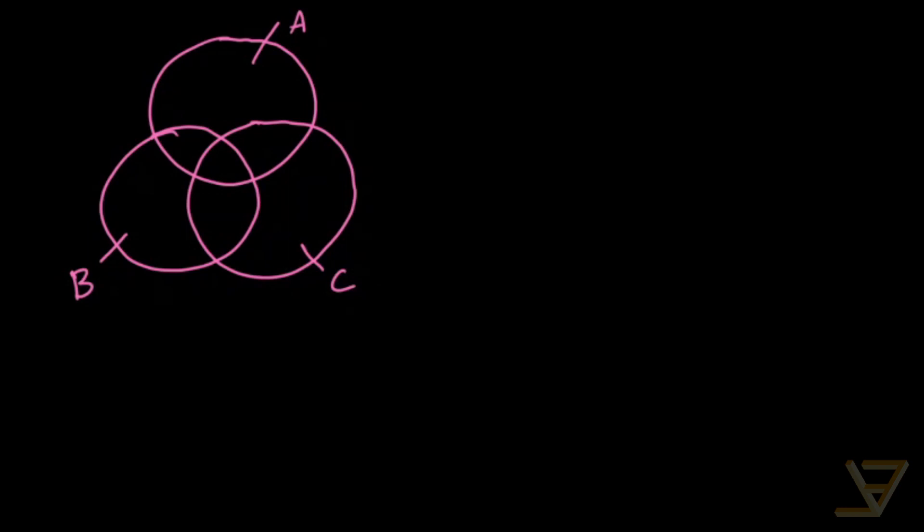This over here, this crescent, so this crescent here is A intersect C. This crescent here is, well it's not really a crescent is it? The crescent is its complement. So it's more of some intersection. This one is A intersect B. And this one is B intersect C. And right in the middle we have A intersect B intersect C.